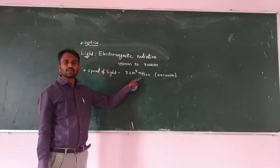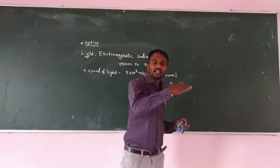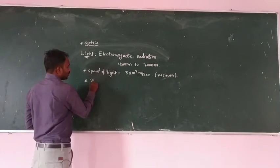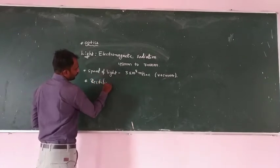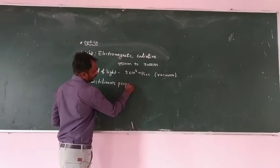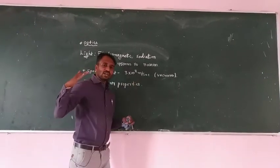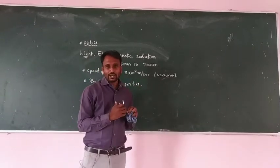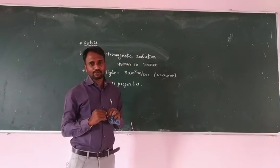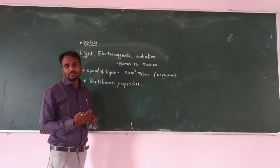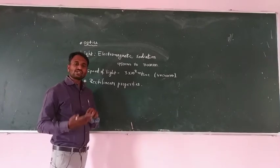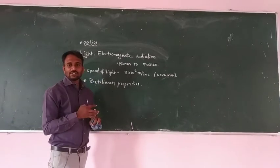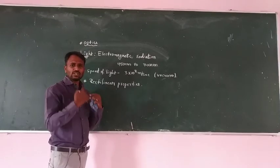The speed of light in a vacuum is 3 × 10⁸ meters per second. Light also shows the rectilinear property — we always say that light travels along a straight line. Combining all properties, we have six total: reflection, refraction, diffraction, polarization, interference, and rectilinear propagation.